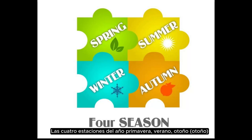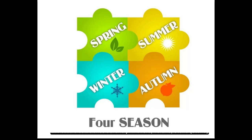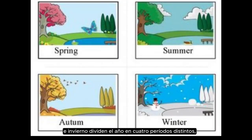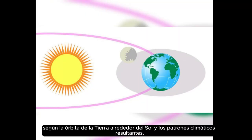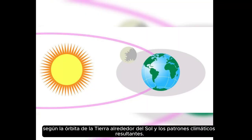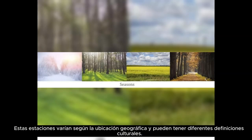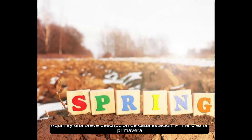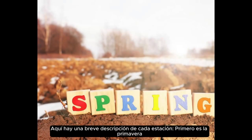The four seasons of the year — spring, summer, autumn, fall, and winter — divide the year into four distinct periods based on the Earth's orbit around the sun and resulting weather patterns. These seasons vary depending on geographic location and can have different cultural definitions. Here's a brief description of each season.